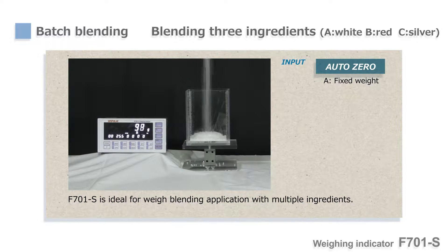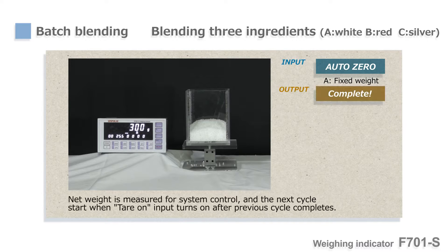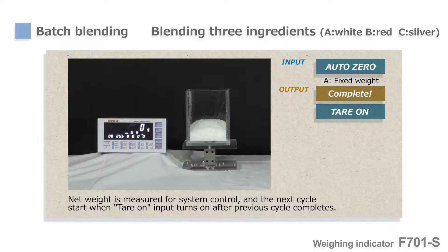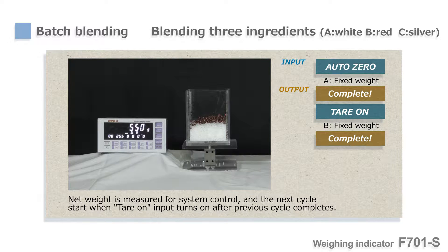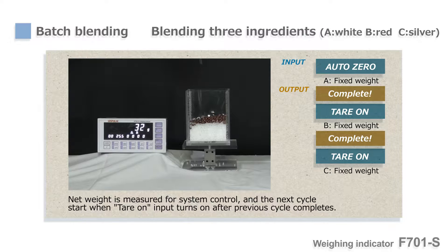Next application is weight batching or blending. At first, an empty container is placed on the scale and tare feature is used to set weight to zero. Then, material A is filled up to the preset weight level. After the first cycle, tare weight feature is turned on before the next weighing cycle for material B starts. Then material B and C can be filled up to each preset weight in the same way.